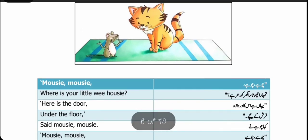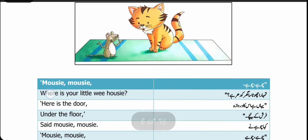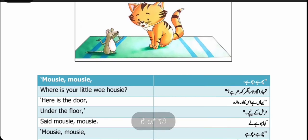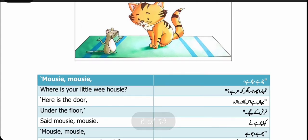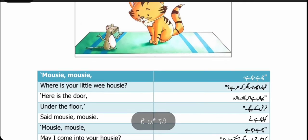Mousy, Mousy — یہاں پے Mousy چوہے کو پیار سے بلایا گیا ہے — چوہے، چوہے، where is your little wee housey? Where — کہاں؟ Is here your — تمہارا — little — چھوٹا — wee — چھوٹا سا housey۔ یہاں پے گھر کو پیار سے housey بولا گیا ہے — تمہارا چھوٹا سا گھر کہاں ہے؟